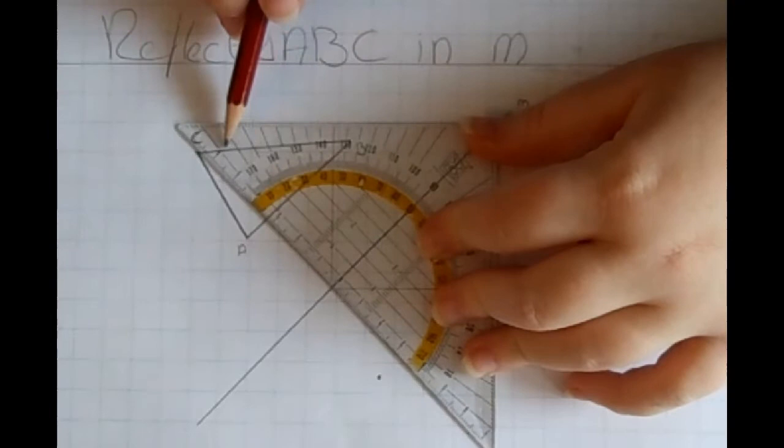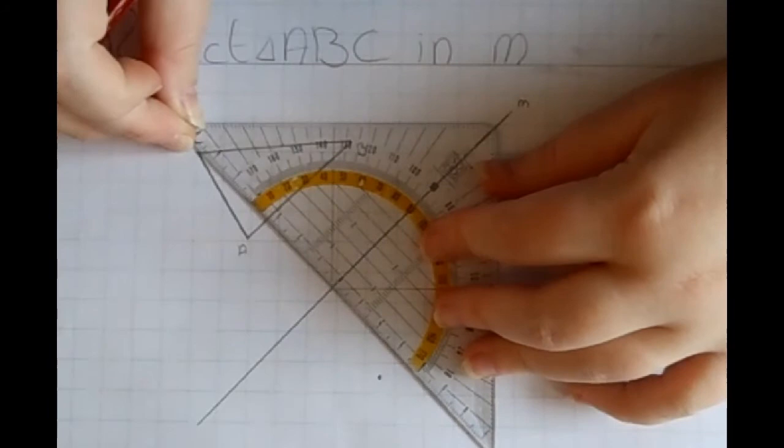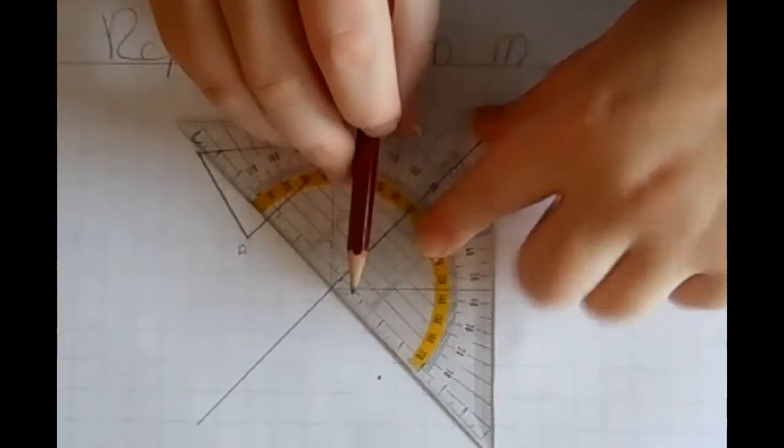Put it on there and then you are going to again measure how far away from the line C is. And you are going to take the same distance on the other side of the mirror line.